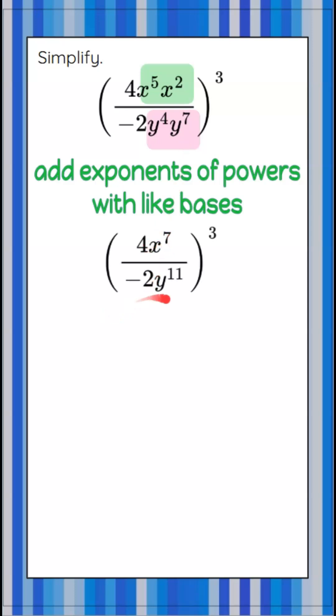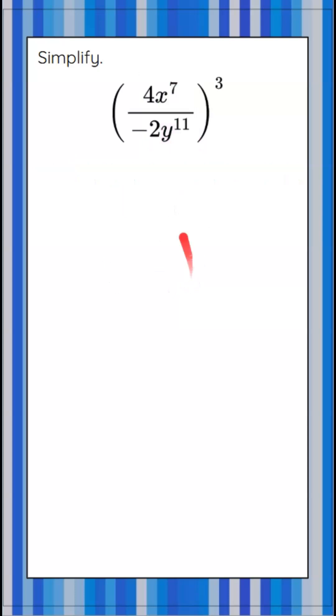4x to the 7th, negative 2y to the 11th. The next thing I want to do is simplify. 4 divided by negative 2 is going to give me negative 2. So negative 2x to the 7th divided by y to the 11th. Now we're ready to raise everything to an exponent of 3.